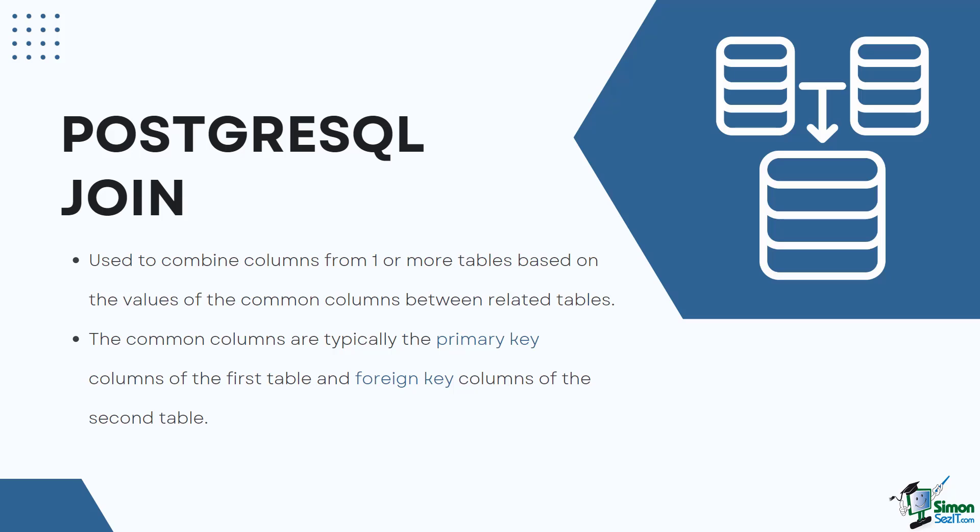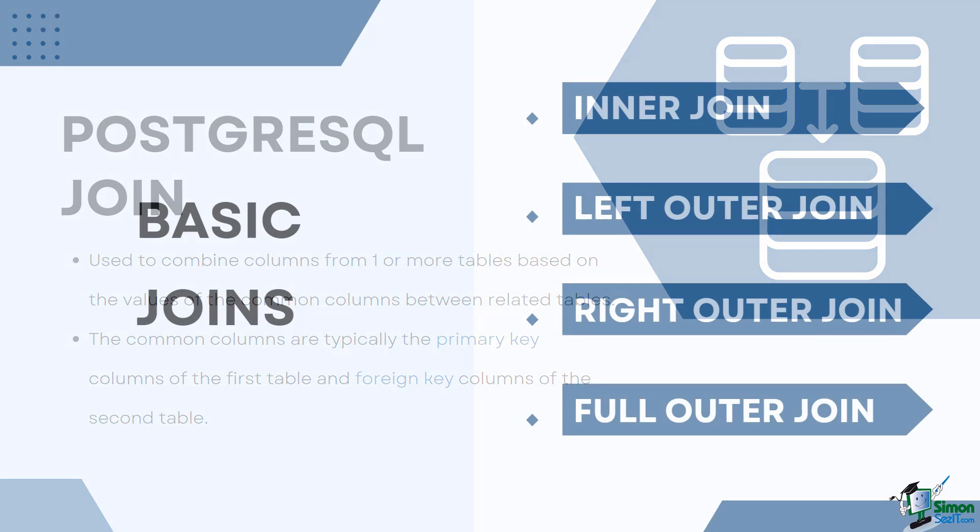PostgreSQL join is used to combine columns from one or more tables based on the values of the common columns between related tables. The common columns are typically the primary key columns of the first table and foreign key columns of the second table.